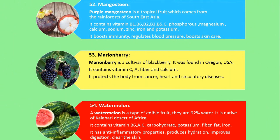Number 52. Mangosteen. Purple mangosteen is a tropical fruit which comes from the rainforests of Southeast Asia. It contains vitamin B1, B6, B2, B3, B5, C, phosphorus, magnesium, calcium, sodium, zinc, iron and potassium. It boosts immunity, regulates blood pressure, and boosts skin care.